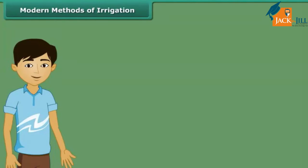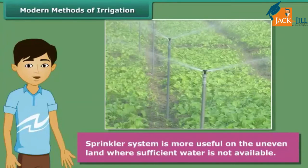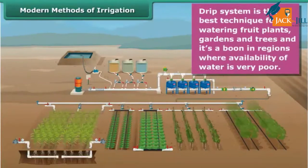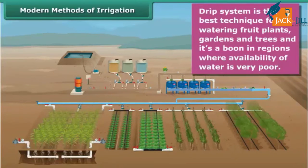Modern methods of irrigation include the sprinkler system and the drip system. In the sprinkler system, perpendicular pipes with rotating nozzles are joined to a main pipeline; water flows under pressure and gets sprinkled on crops as if it is raining — most useful on uneven land where water is scarce. In the drip system, water falls drop by drop directly at the root position, best for fruit plants, gardens and trees, with no water wasted — a boon in regions with poor water availability.